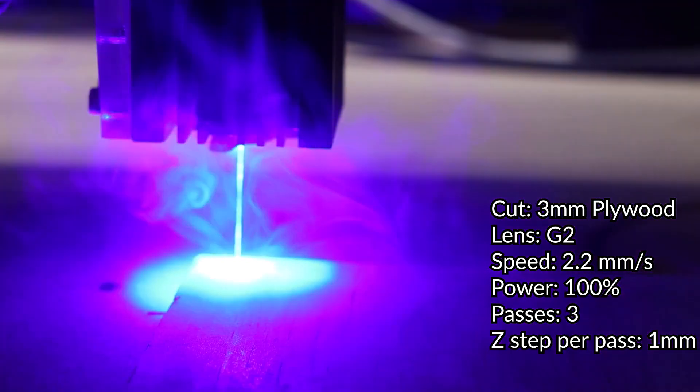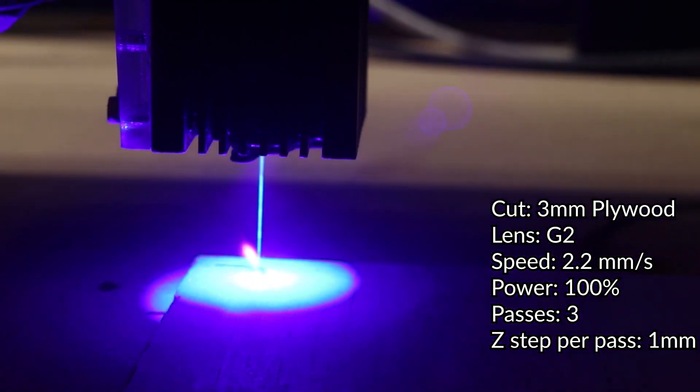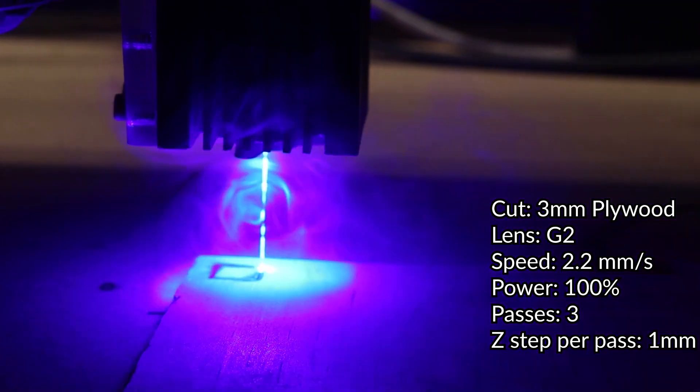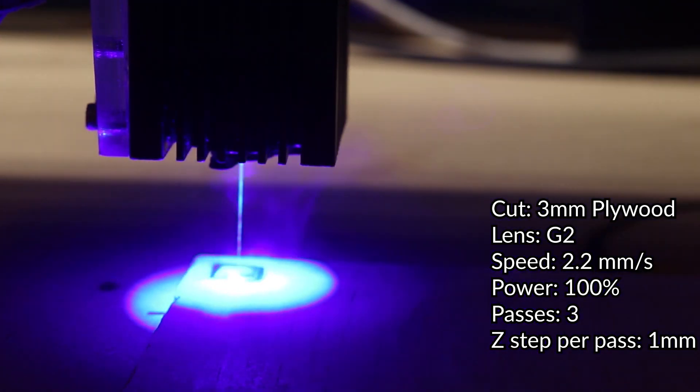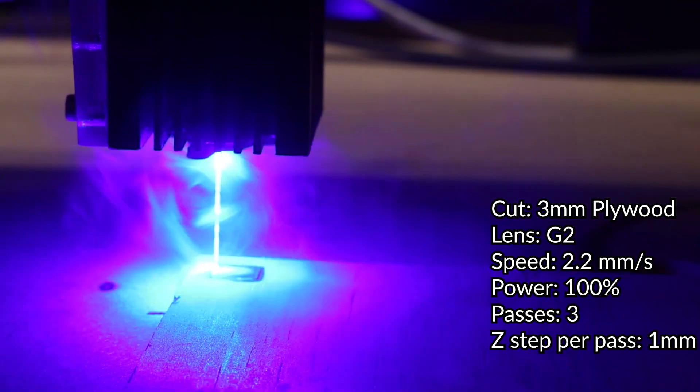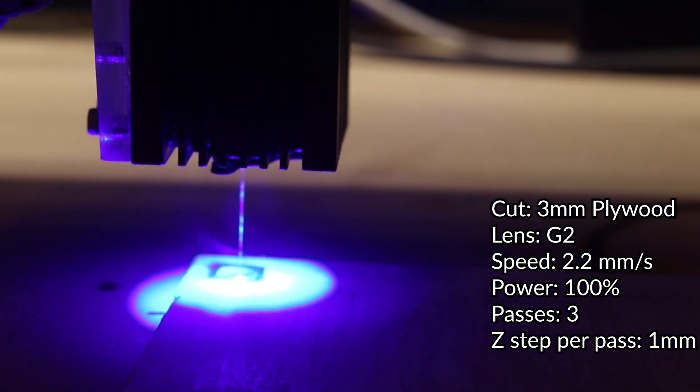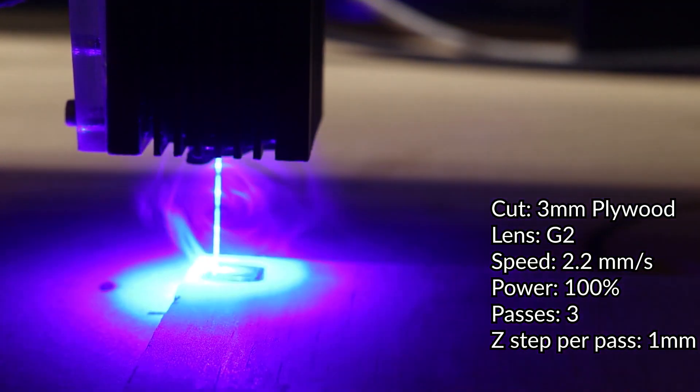So we can start with 3 millimeter wood. What you're going to notice is that there's going to be a lot of dark spots on the top layer of our material. So if I were to do this over again, I would definitely raise the speed and lower the power. You can also increase the amount of passes if that's not enough.